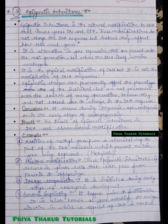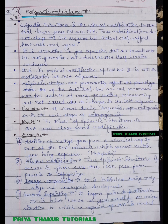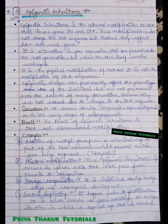The first example of epigenetic inheritance is the addition of a methyl group — a chemical tag — to part of the DNA molecule, which prevents certain genes from being expressed. This process is known as methylation.